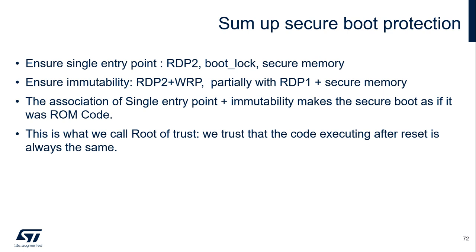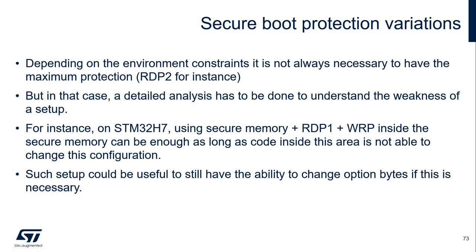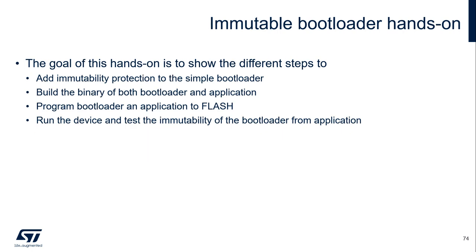Regarding secure boot protection variations: depending on environment constraints, it is not always necessary to have maximum protection such as RDP level 2. In that case, a detailed analysis must be done to understand the weakness of the setup. For instance, on STM32H7, using secure memory plus RDP 1 plus WRP inside the secure memory can be enough, as long as code inside this area is not able to change this configuration. Such a setup could be useful to still have the ability to change option bytes if necessary. Now let's have a hands-on of the bootloader immutability, showing the different steps to add immutability protection to the simple bootloader, build a binary of both bootloader and application, program to the board, run the device, and run a test of the immutability of the bootloader.